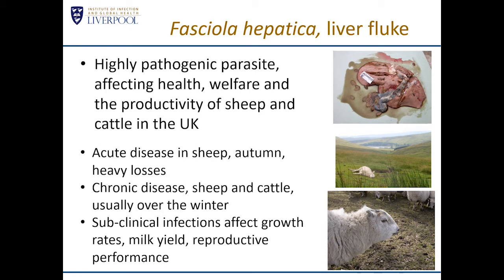The parasite causes acute disease, which we typically see in sheep in the autumn. Acute fasciolosis can result in heavy losses — a sudden death of often several sheep within a flock. Chronic disease can affect both sheep and cattle; we typically see it in the winter months — January, February, March. It's characterized by gradual weight loss, and animals become very anaemic. You can check the mucous membranes — the eye conjunctiva and the gums — and animals are very pale. We typically see bottle jaw, which is associated with an accumulation of fluid in the tissues linked to that anaemia.